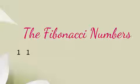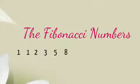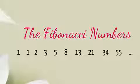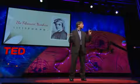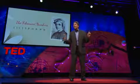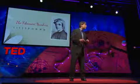From the standpoint of calculation, they're as easy to understand as 1 plus 1 is 2, then 1 plus 2 is 3, 2 plus 3 is 5, 3 plus 5 is 8, and so on. Indeed, the person we call Fibonacci was actually named Leonardo of Pisa, and these numbers appear in his book Liber Abaci, which taught the Western world the methods of arithmetic that we use today.